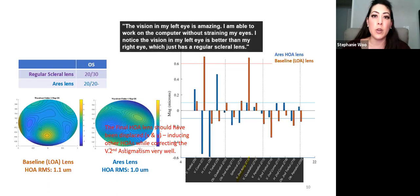The final HOA lens should have been displaced, inducing maybe some of these other higher order aberrations. But for some reason, this patient ended up seeing really well with the HOA lens, maybe correcting for some of these more bothersome types of higher order aberrations.